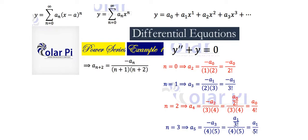We're starting to see what's happening. All the a sub n's corresponding to even n — like a sub two and a sub four — are related to a sub zero, with denominators being two factorial, four factorial, and so on. All the odd a sub n's are related to a sub one, with denominators being three factorial, five factorial, and so on.